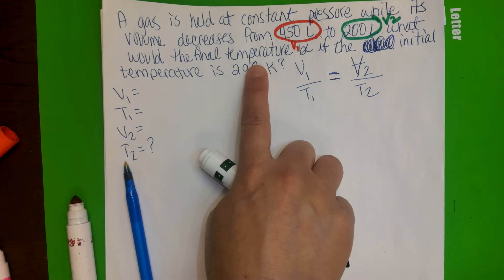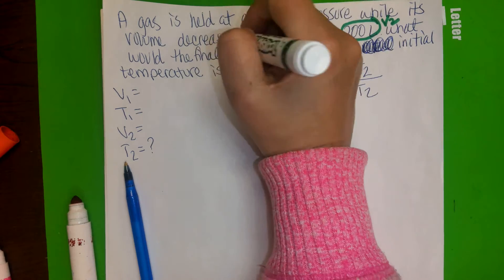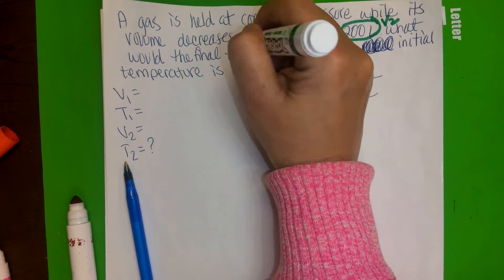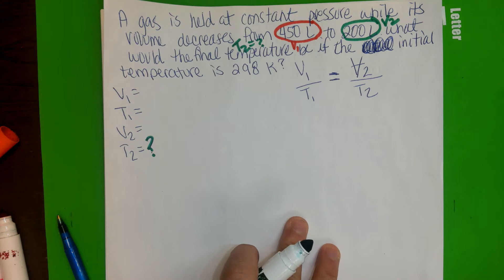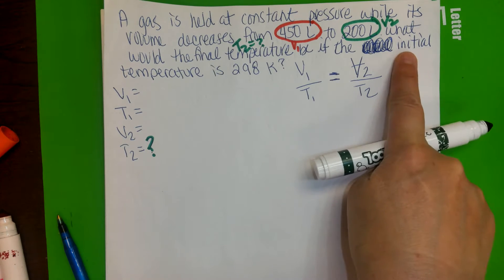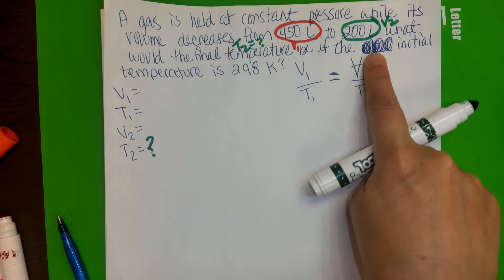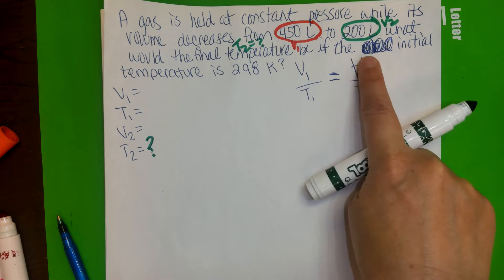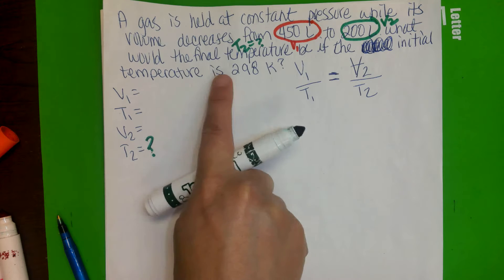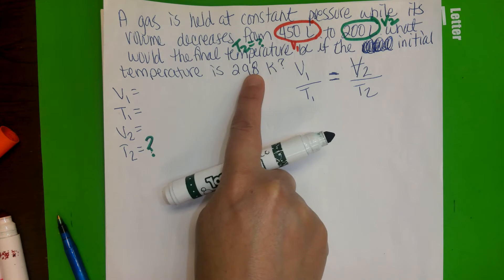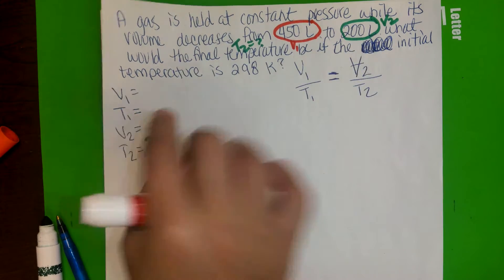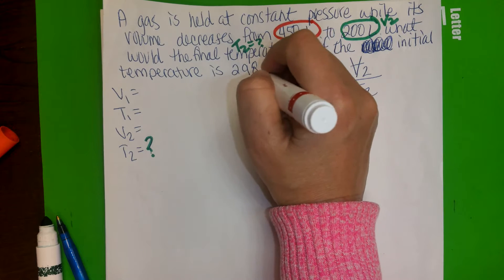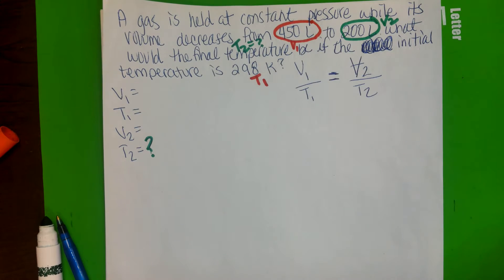What would be the final temperature? Your temperature 2 is the one we're trying to solve. If the initial temperature is 298 Kelvin, that means this initial temperature is this one right here. So that would be your T1.